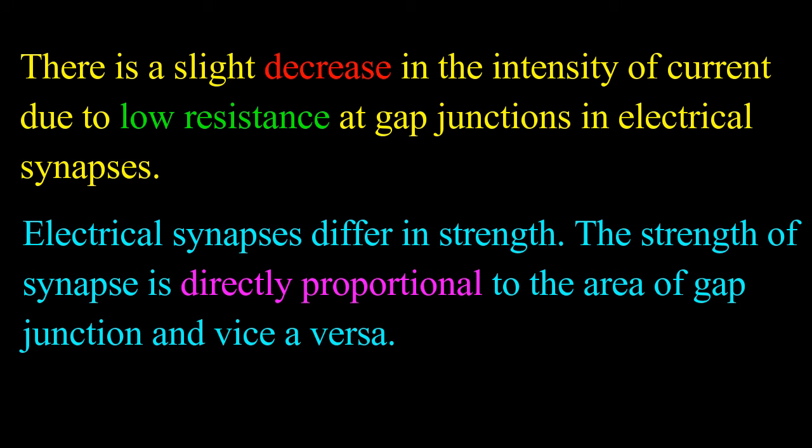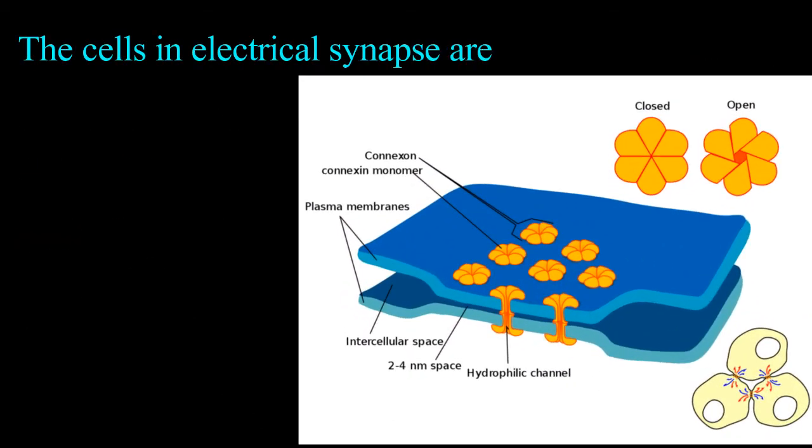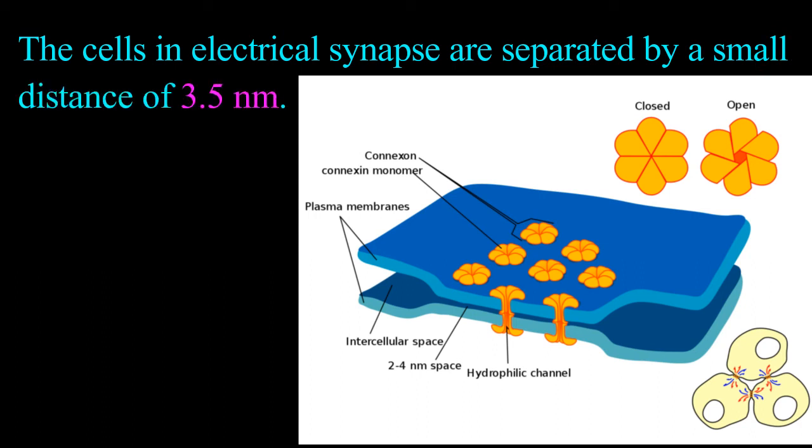The strength of synapse is directly proportional to the area of gap junction and vice versa. The cells in electrical synapse are separated by a small distance of 3.5 nanometers against the 20 to 30 nanometers present between chemical synapses.